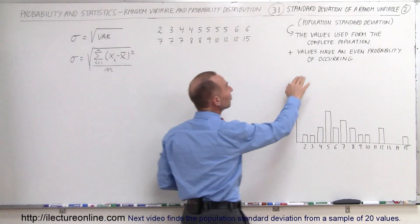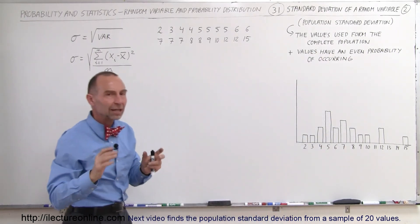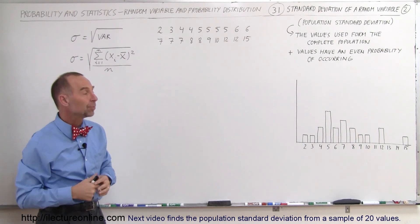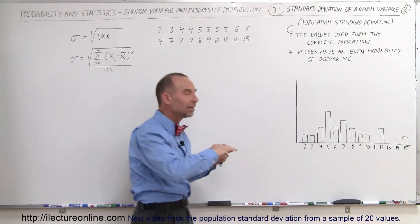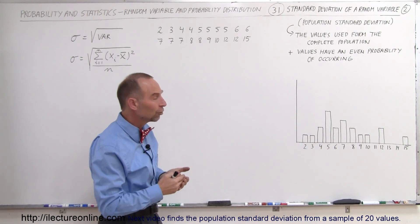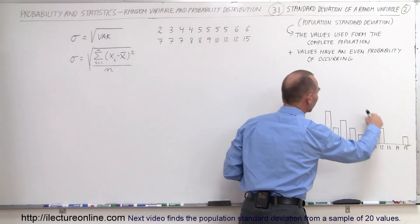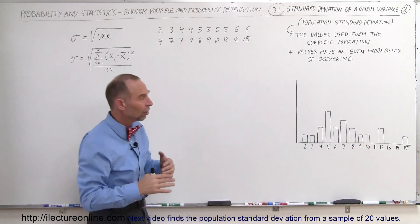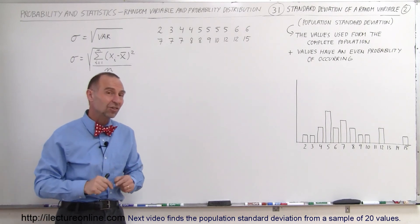Another way to look at it is that all values have an even probability of occurring — we've accounted for every value and each can occur with equal probability. Here we've drawn a histogram chart showing the distribution of how many times each number occurs. You can see it's not a nice normal curve, which we'd normally expect from a large population. This is a relatively small population, so we don't expect a normal distribution, but we can still calculate the standard deviation.